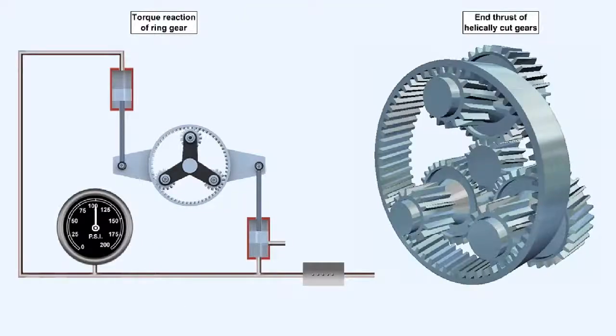There are two types of hydraulic torque meter system, one which utilizes the end thrust generated by a helically cut gear, the other employs the torque reaction of a ring gear. They're both used to alter the oil pressure of the torque transmission system, which is then transmitted to the torque meter gauge on the instrument panel. This simplified diagram shows a ring gear system.